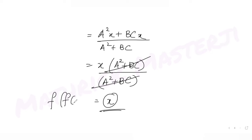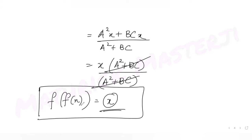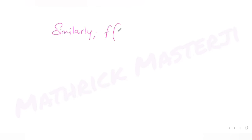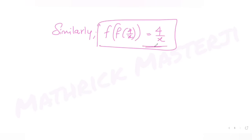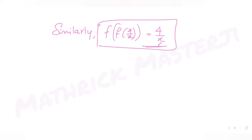So f(f(x)) = x. Now for f(f(4/x)): since f(f(x)) = x, I can just substitute 4/x in place of x, giving f(f(4/x)) = 4/x. You don't actually need to recompute it — the same identity applies.